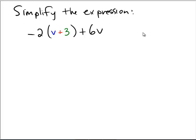So in the first case we have a negative 2 multiplied by a quantity v plus 3. So in order to perform this we want to use the distributive property.